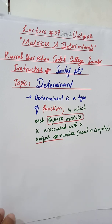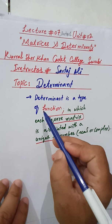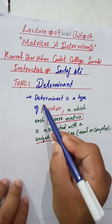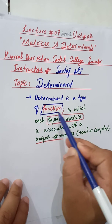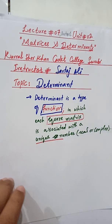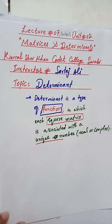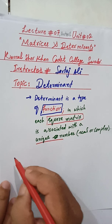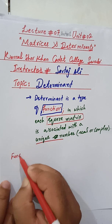Since determinant is a type of function, we will first briefly revise the idea of a function, and then discuss how determinant can be thought of as a function.